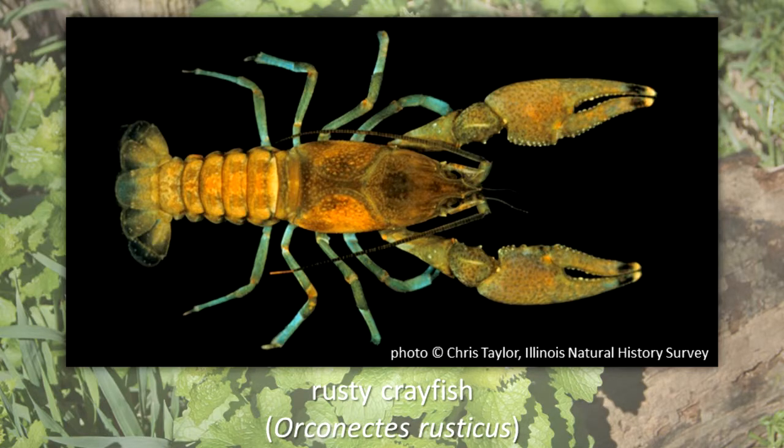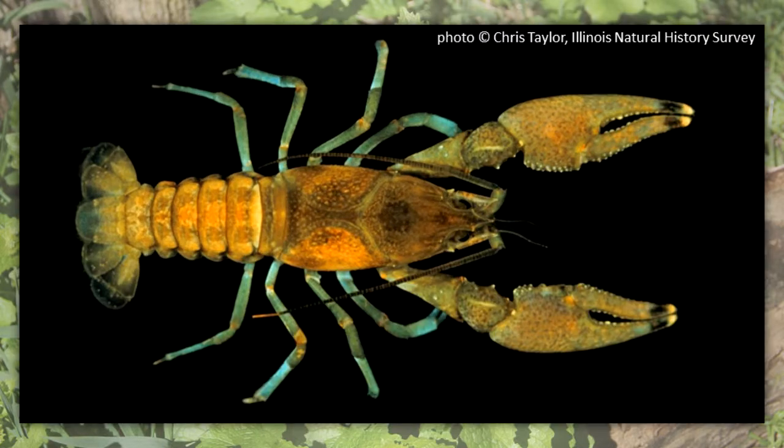Rusty Crayfish. The Rusty Crayfish is native to the Ohio River and parts of Kentucky, Indiana, and Ohio. It has spread to many other parts of the United States and Canada. It displaces and or hybridizes with native crayfish, decreases the density and variety of invertebrates, and reduces the abundance and diversity of aquatic plants that native fish use for cover and food. The Rusty Crayfish eats plants and animals and can feed at two times the level of similarly sized native crayfish.